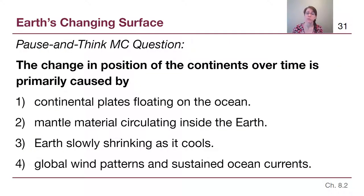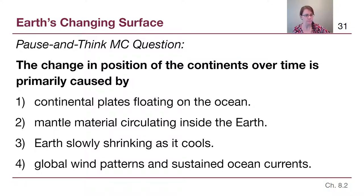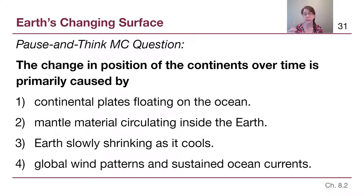A pause and think question: the change in position of the continents that we see on our globe over time is primarily caused by which of the listed things? Sometimes people read quickly and see the continental plates statement, but they aren't floating on the ocean. The plates themselves are attached to and being moved by the mantle. The correct answer is that mantle material is circulating inside the Earth. That circulation — it may be worth writing down — is convection, the same convection we talked about for the sun's outer layers beneath the photosphere.